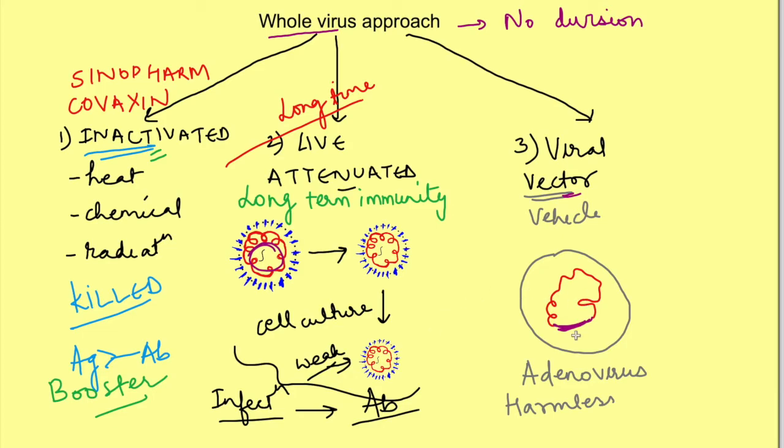So virus is acting as a vehicle for carrying that particular genome into the cells so that once it enters into the cells of the body then these spike proteins can be produced and our immune system can become activated. These vaccines are also known as conjugate or recombinant vaccine.